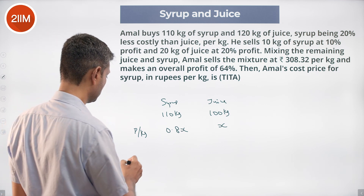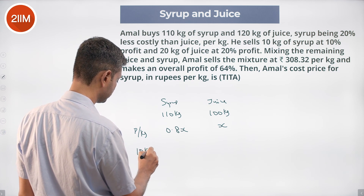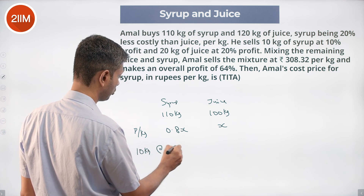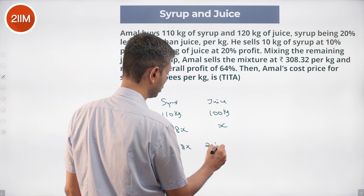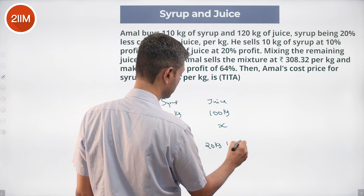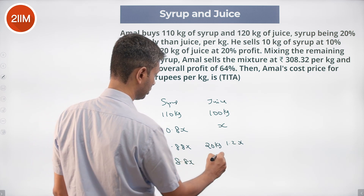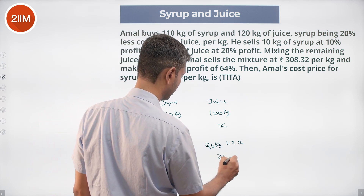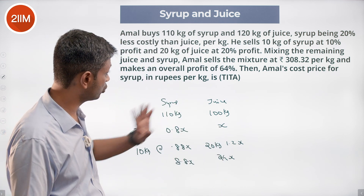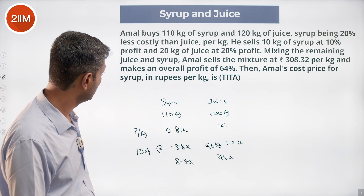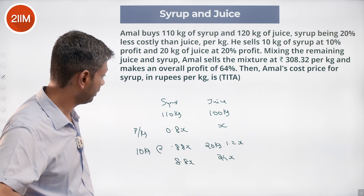He sells 10 kilograms of syrup at 0.88X and 20 kilograms of juice at 1.2X. So he gets 8.8X plus 24X, where X is the price per kilogram of juice.